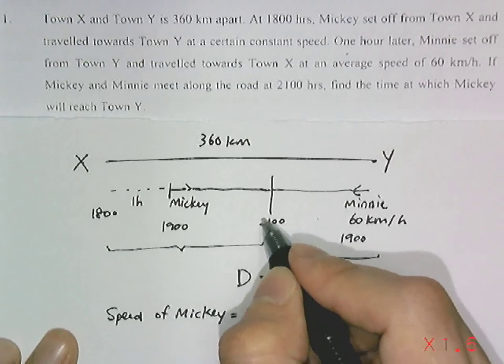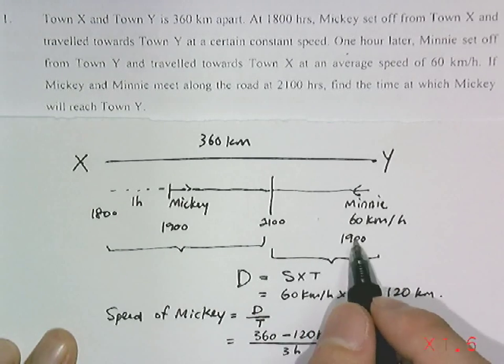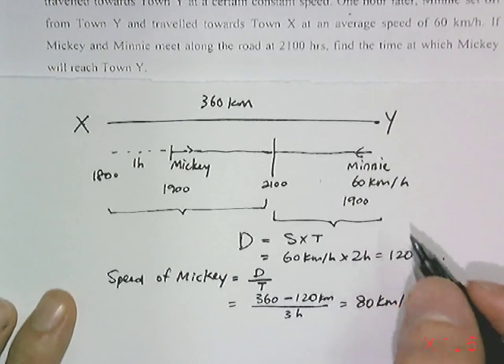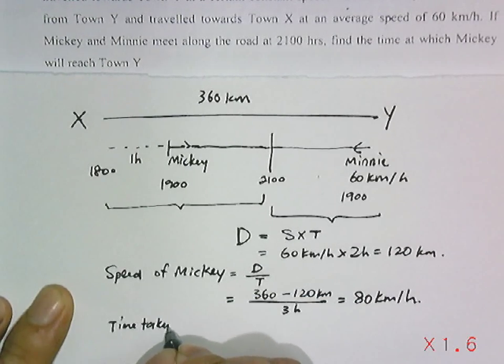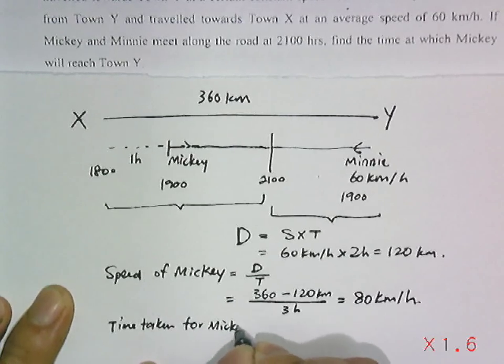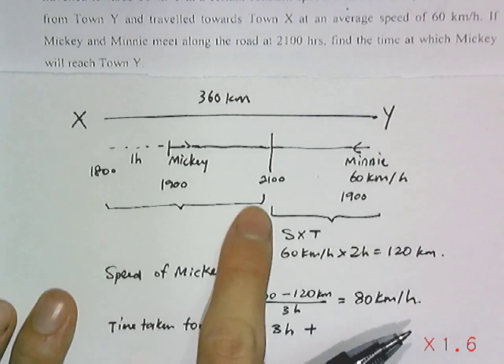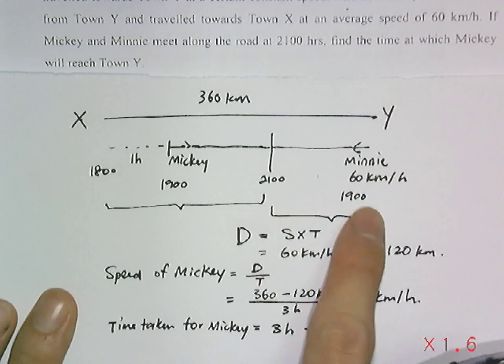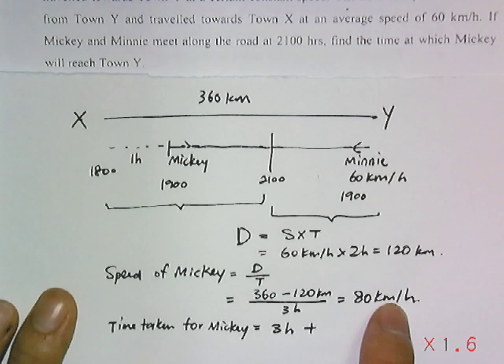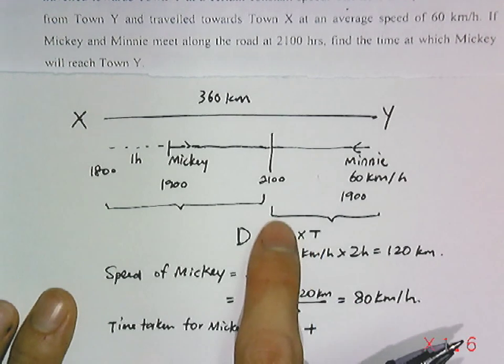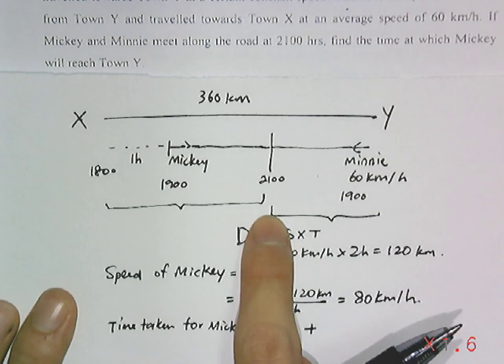Take the distance, the same distance for this part, 120 km. The time taken for Mickey will include this three hours, plus the time here. The time here, we have to use the distance divided by the speed. There's a second part timing for Mickey, which is from the meeting point towards Y. Taking the distance over the speed.